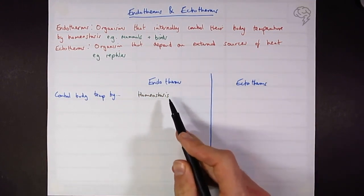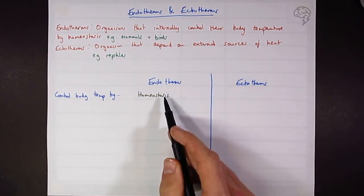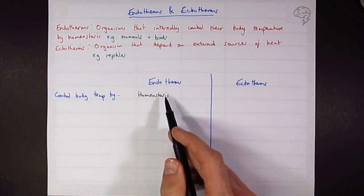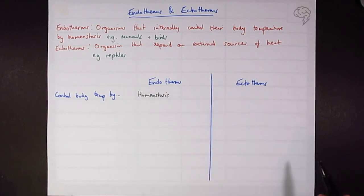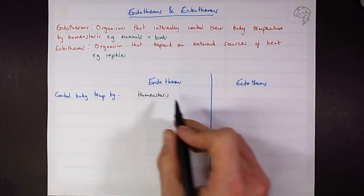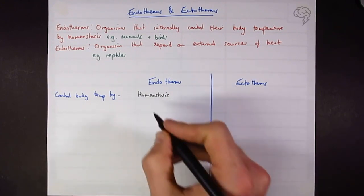So endotherms, well we've already mentioned it - we can say homeostasis as well as one other thing. Examples of that: you've got shivering, you've got sweating, you've got your hair standing up. There's all sorts of mechanisms that we can use to control our body temperature. The other one is going to be the one that applies to ectotherms as well as endotherms...